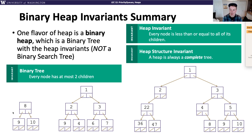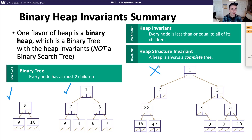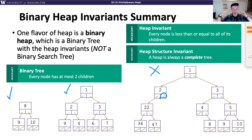Here are some examples. The first tree is a binary heap: it's a binary tree, 8 is less than or equal to its children 9 and 10, and it's a complete tree. The second tree also meets all three invariants — 1 is less than 2 and 3, 2 is less than 9 and 4, 3 is less than 6 and 7, and it's complete. The last tree is not a binary heap because it's not complete — the node 2 has a null child while other nodes at the same level aren't null, meaning nulls appear in the middle of the tree.